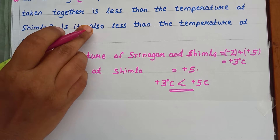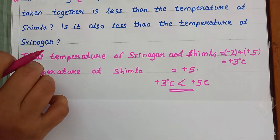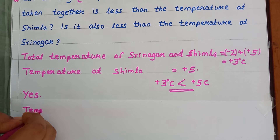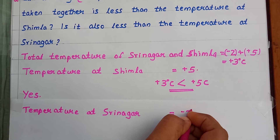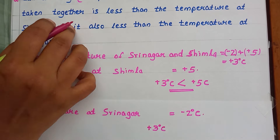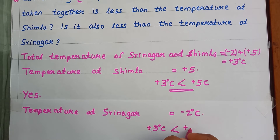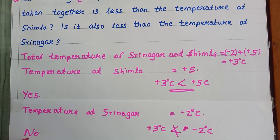One more question: is the combined temperature also less than the temperature at Srinagar? Temperature at Srinagar equals minus 2 degrees Celsius. They are saying that positive 3 is less than negative 2. But this is not correct — positive 3 is greater than negative 2 degrees Celsius. So the answer is No.